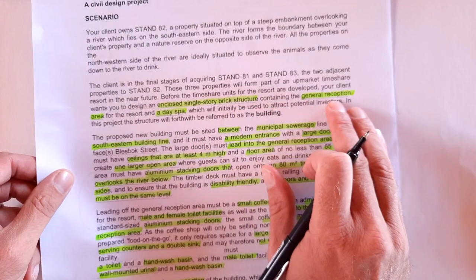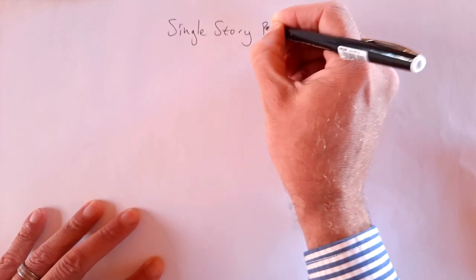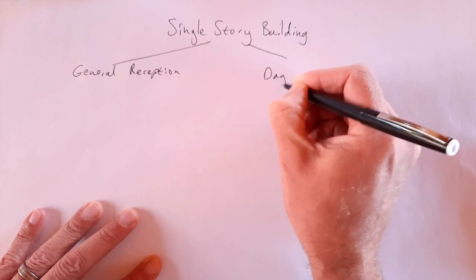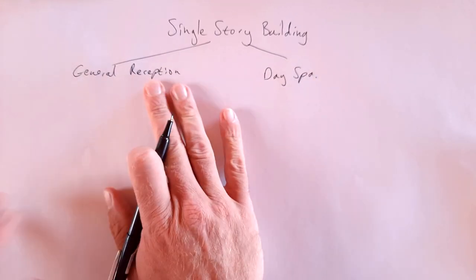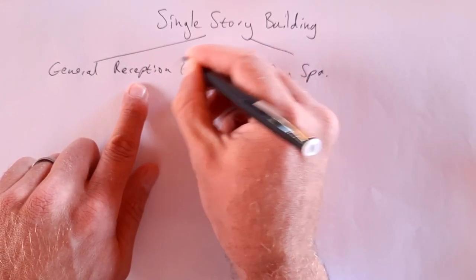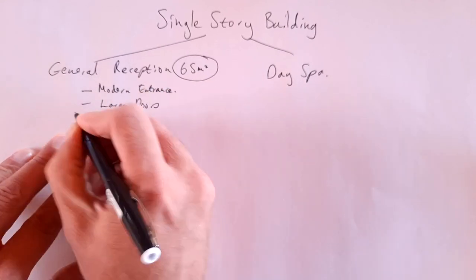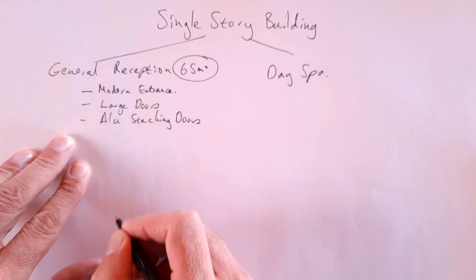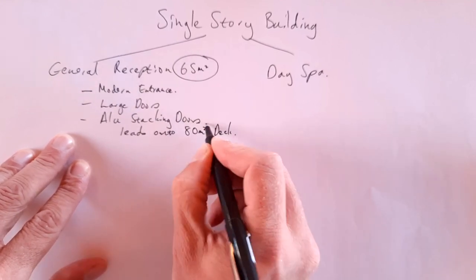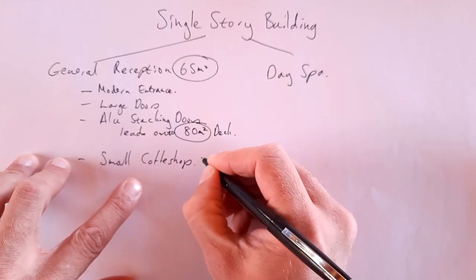A single-story brick structure with a general reception and a day spa. We're going to start with the heading: single-story building, split into two parts — general reception and on the other side, the day spa. Now we're going to populate this specific field using the actual design brief. We've got 65 square meters for the reception. It must have a modern entrance, large aluminum stacking doors, which lead onto an 80 square meter timber deck. There must also be a small coffee shop of 12 square meters.